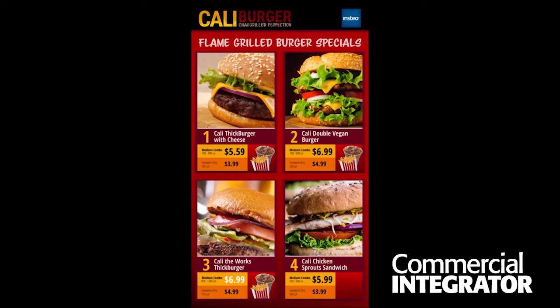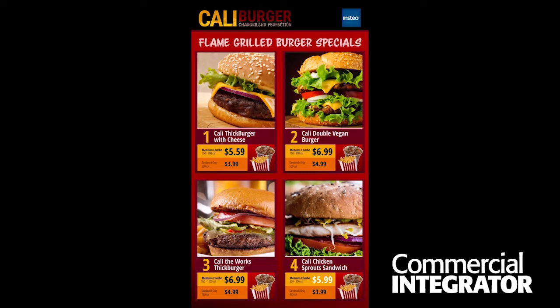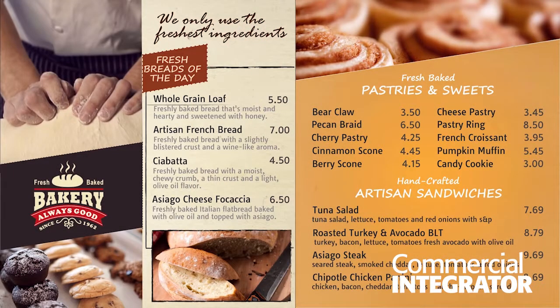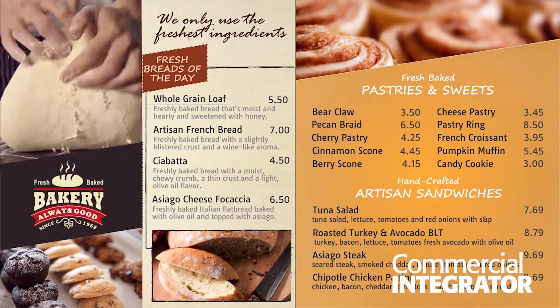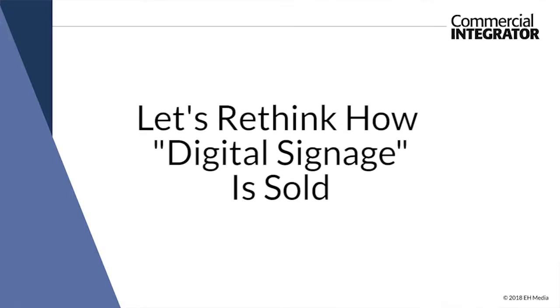But one of the more key things beyond all of that — let's say it's a small restaurant chain the integrator is working with. If they do the digital content for those displays over the next three years, they become the trusted business partner for that restaurant chain. When that chain goes to do a technology refresh — whether it's 4K, 8K, or larger sizes — that integrator is the trusted partner, and maybe it doesn't even go out for bid.